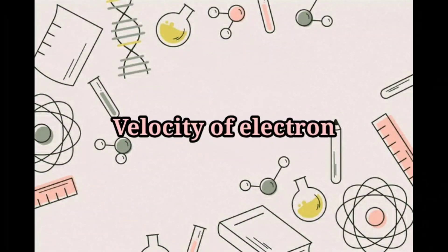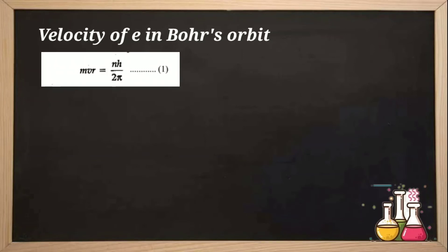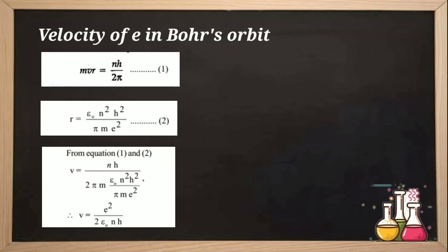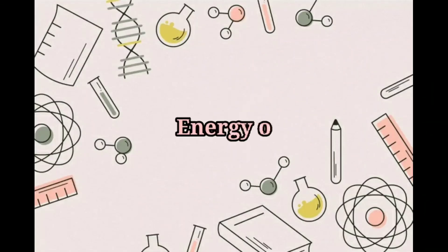Next, to find the velocity, we again use the quantization condition m·v·r equals n·h/2π, and substitute the value of r we just calculated. After simplifying, the velocity of the electron in the nth orbit is v_n equals Z·e² / (2·h·ε₀·n). Simplifying further, v_n equals (e²/2hε₀) × (Z/n). Putting in all constant values, this gives v_n equals 2.18 × 10⁶ × (Z/n) m/s, where Z is the atomic number and n is the shell number.